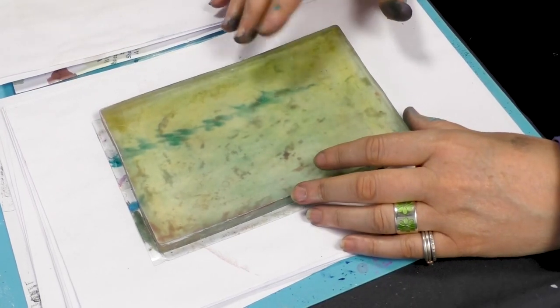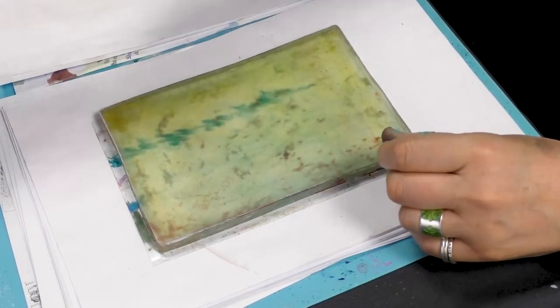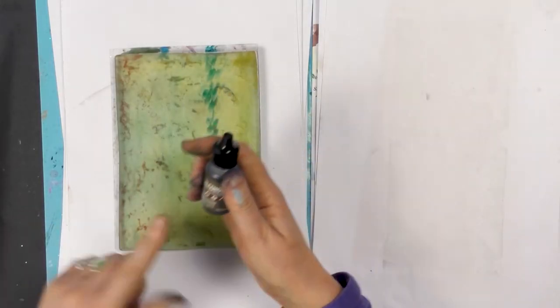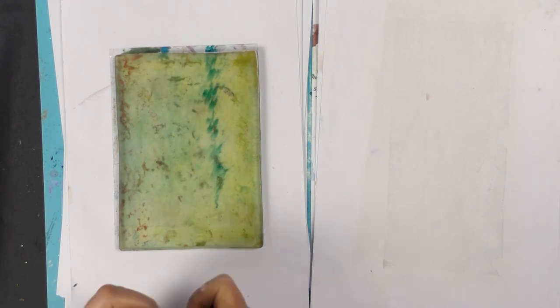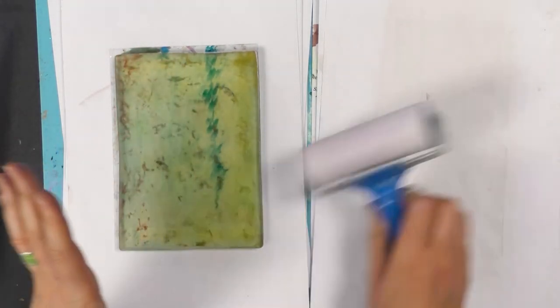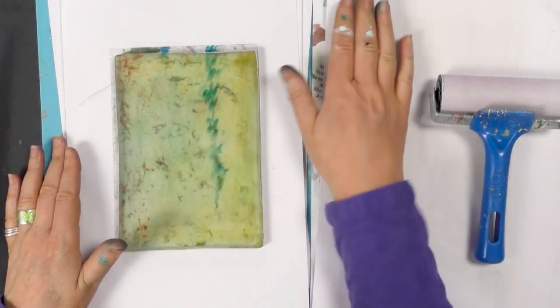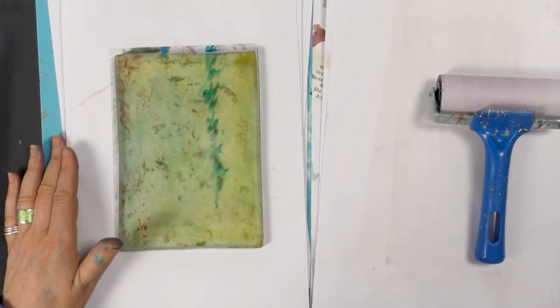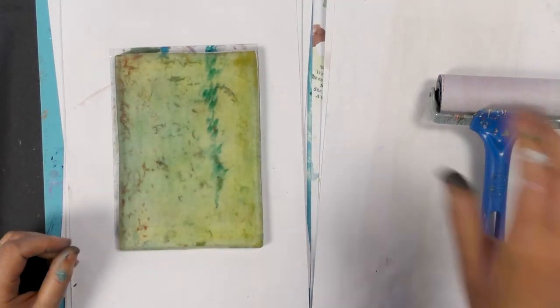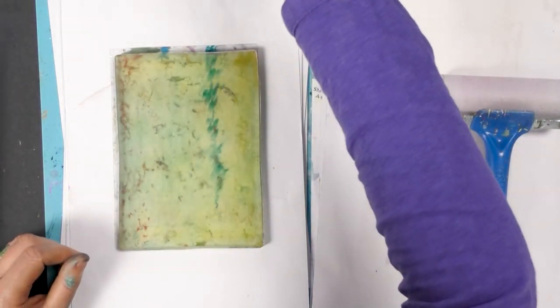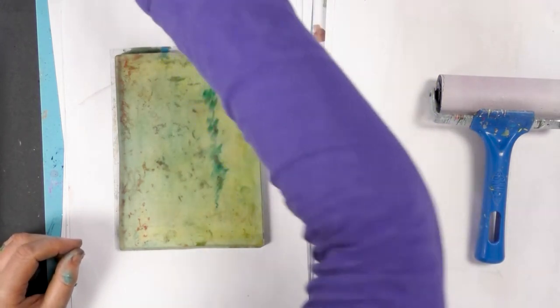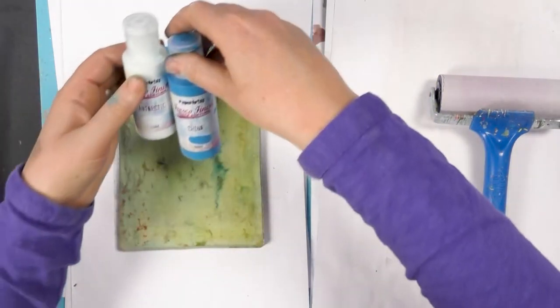We're going to be using stencils and acrylic paints and also alcohol ink. So we need our gel press, sprayer, and our photocopy paper and then our card to take the print. And the colors we're going to be using today, I think we're going to go with the Antarctic and China.